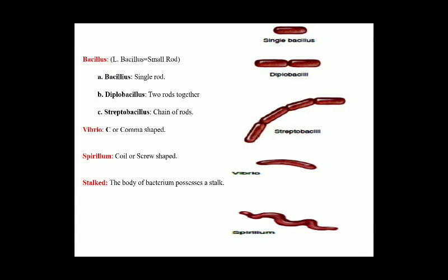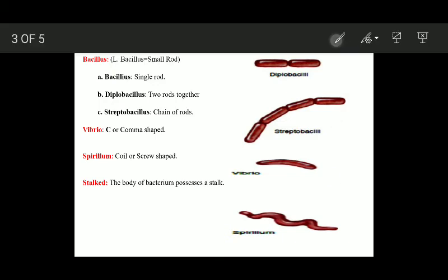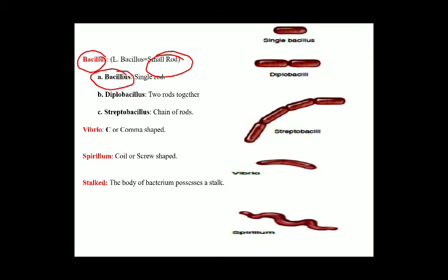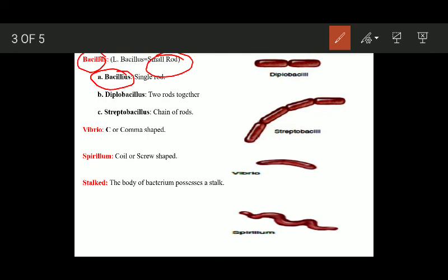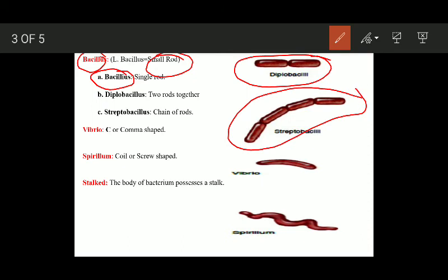Another shape category is bacillus. The literal meaning of bacillus is a small rod — those bacteria shaped like a small rod are known as bacillus. Subcategories include: simply bacillus for a single rod; diplobacillus when two rods are attached to each other; and streptobacillus when a chain of rods is attached to each other. One more category is vibrio — these bacteria are comma-shaped.